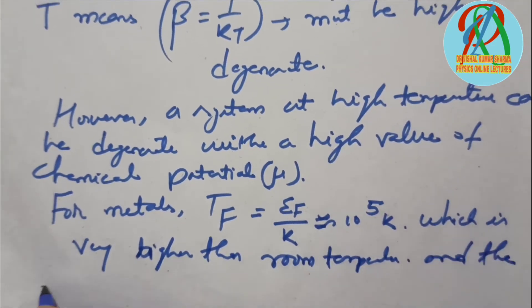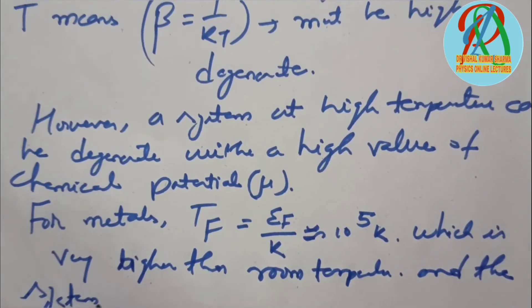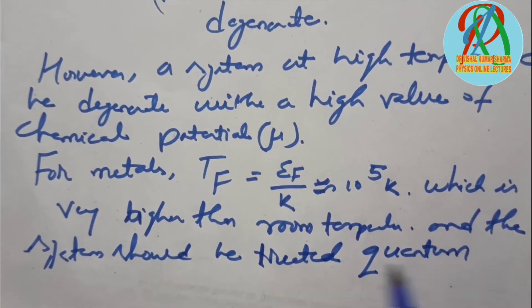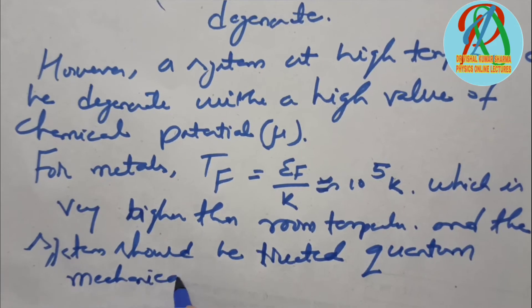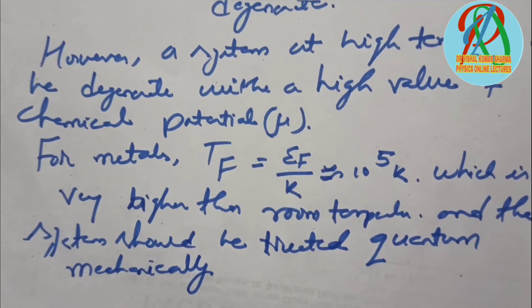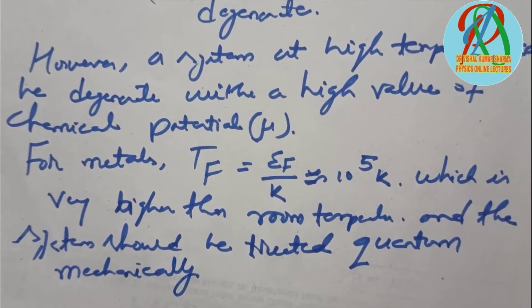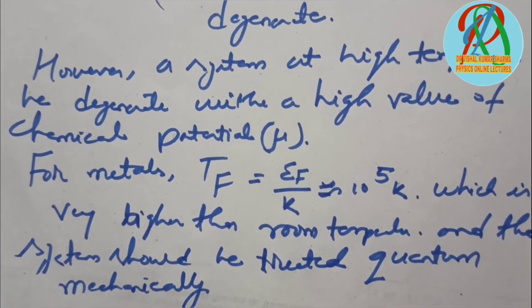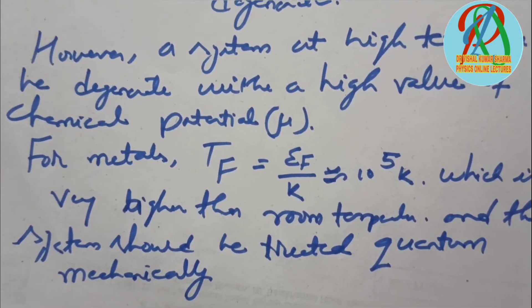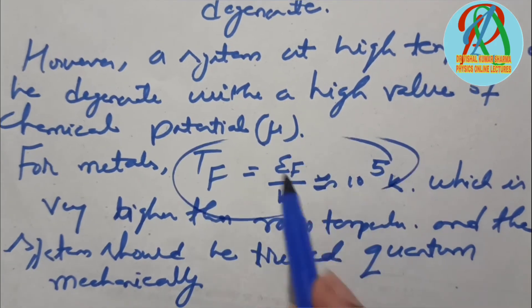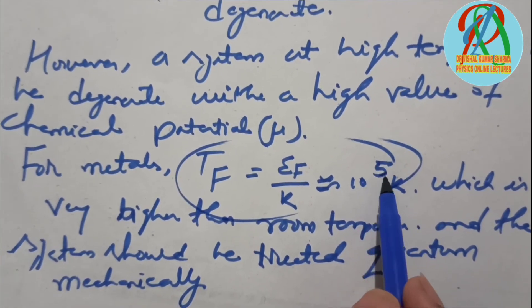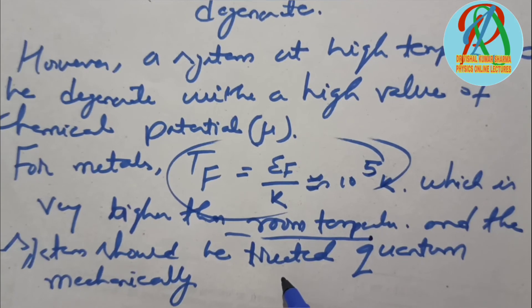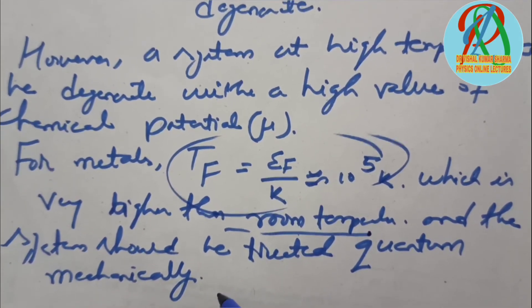The system should be treated quantum mechanically. To summarize: systems at low temperature with high beta are degenerate, or systems at high temperature with high chemical potential are degenerate. For metals, the Fermi temperature is very high, so quantum mechanical treatment is required.